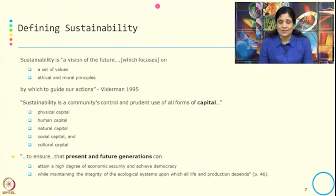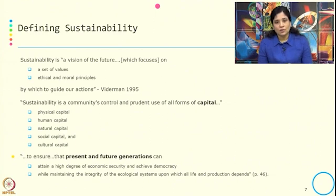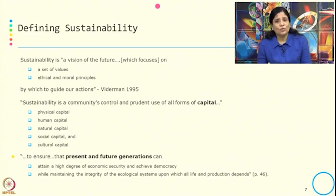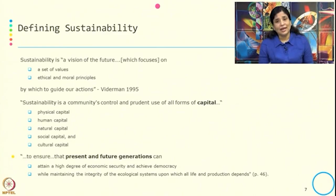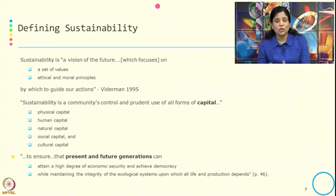So what is sustainability? Sustainability is a community's control and prudent use of all forms of capital — physical capital, human capital, natural capital, social capital, and cultural capital. This control and prudent use is necessary to ensure that present and future generations can attain a high degree of economic security and achieve democracy, by maintaining the integrity of the ecological system upon which all life and production depends.